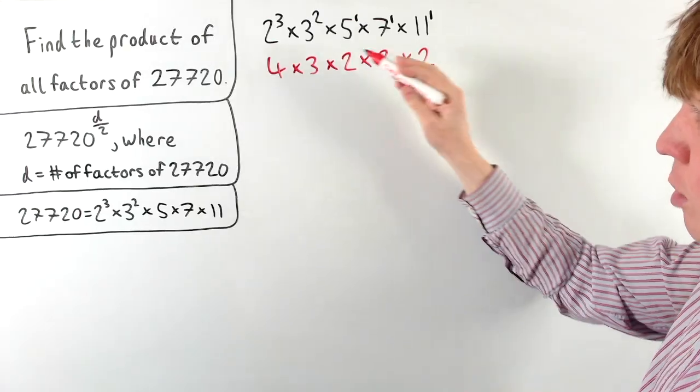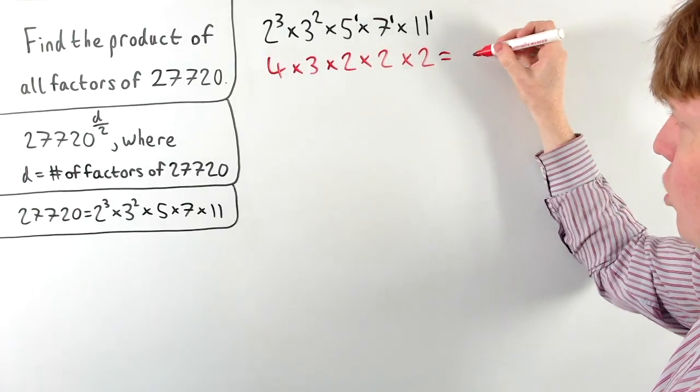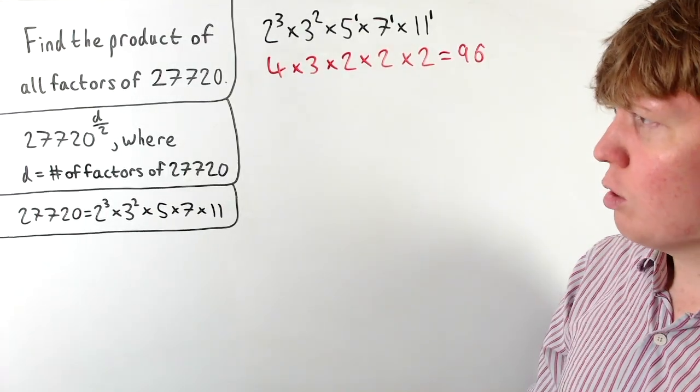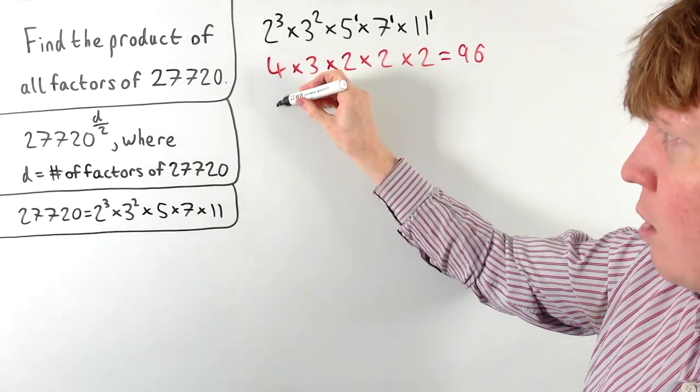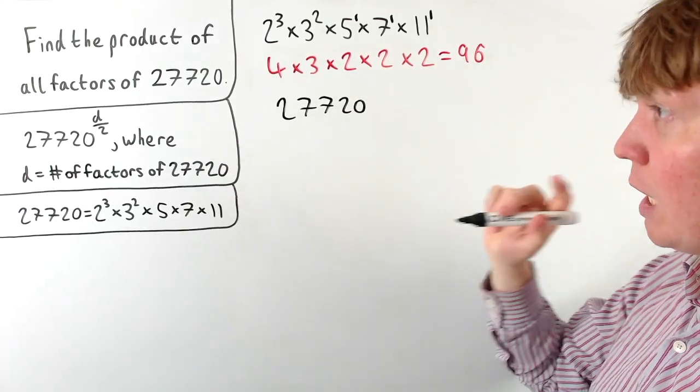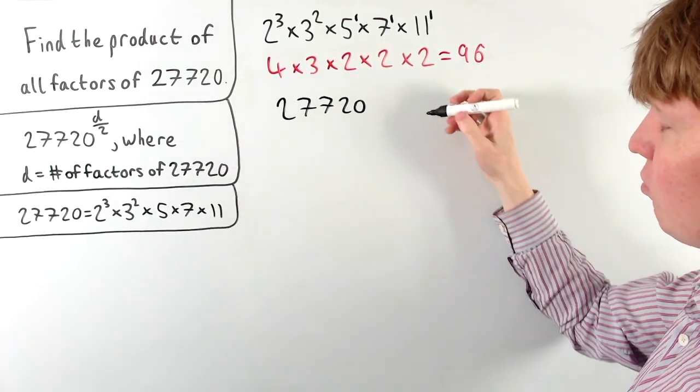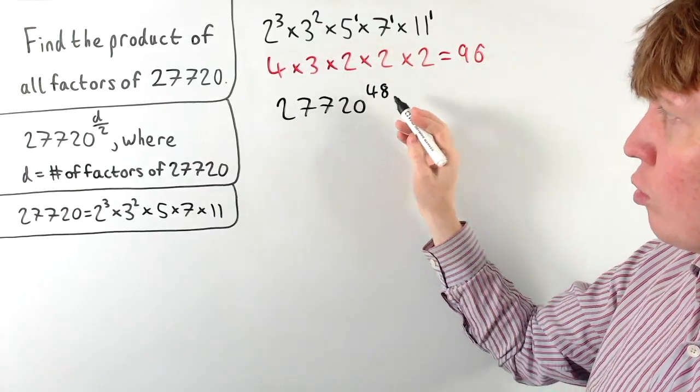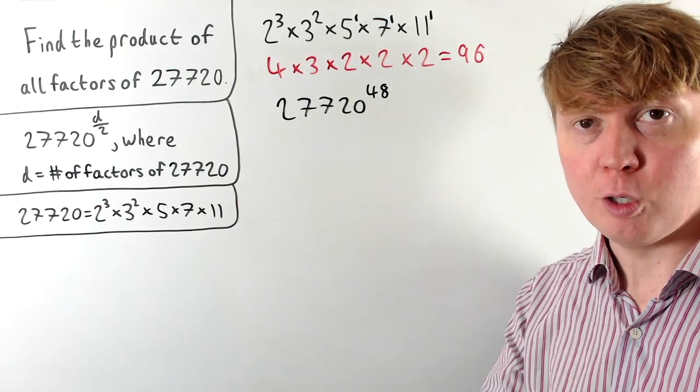So when we multiply together all of these options, 4 times 3 times 2 times 2 times 2, we get 96. So our answer isn't 27,720 to the power of 96, because remember this is the number of factors, but we need to divide this by 2 because we're counting all the factor pairs from earlier. So our final answer would be 27,720 raised to the power of 48.